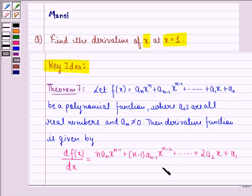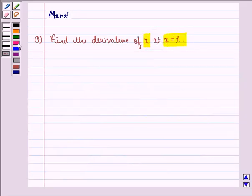So this is the key idea for this question and this is how we find the derivative of x at the point x equal to 1. Let us start with the solution to this question. First of all, f(x), the function, is given to us to be equal to x.